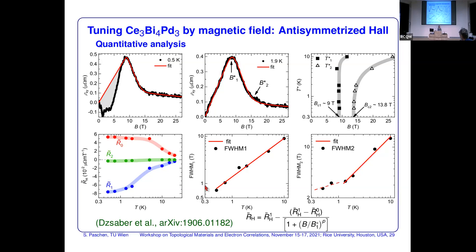Q: You have a linear dispersion but also a large effective mass — how do you interpret that? A: In any system, even non-interacting, it is the slope of the linear dispersion that gives the Fermi velocity, not the speed of light. In our case the Fermi velocity is the strongly renormalized velocity of a heavy fermion system — instead of steep linear bands, we have flat linear bands. It's really about the slope of the linear dispersion.